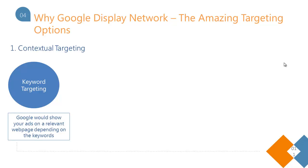The first targeting option under contextual targeting is keyword targeting. You select specific keywords relevant to what you have to offer, and Google shows your ads on web pages that have those keywords. For instance, if I want to run an ad for this webinar, I can put in keywords like Google AdWords, Google AdWords training, Google Ads, or digital marketing for a broader reach. Google would then show my ads on websites that have those keywords.